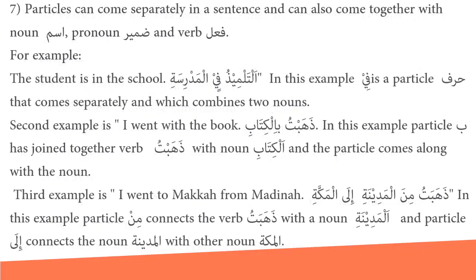Number 7: particles can come separately in a sentence or together with noun, pronoun, and verb. For example, 'al-tilmidhu fi al-madrasa' (the student is in the school) — here 'fi' is a particle that comes separately, combining two nouns. In 'dhahabtu bi-al-kitab' (I went with the book), particle 'ba' joins the verb with the noun. In 'dhahabtu min al-madinah ila Makkah' (I went from Medina to Makkah), 'min' connects the verb with the noun al-madinah, and 'ila' connects al-madinah with another noun al-Makkah.